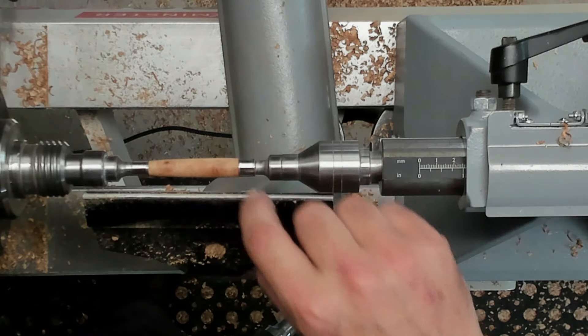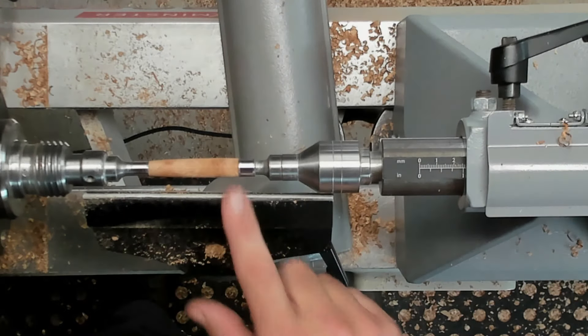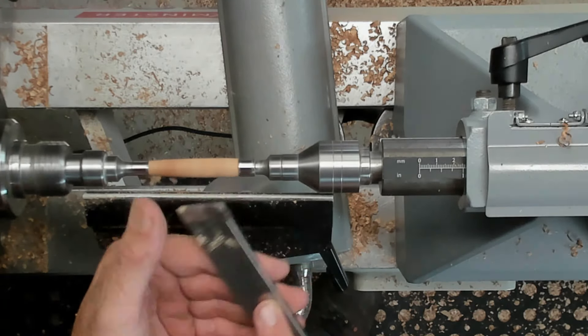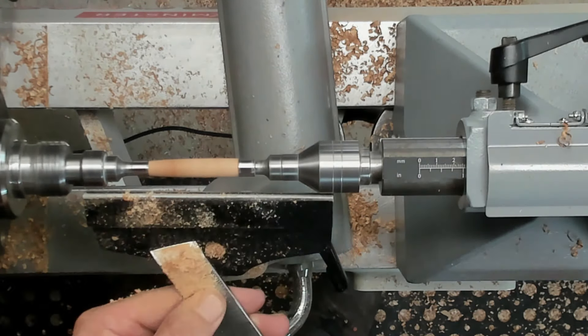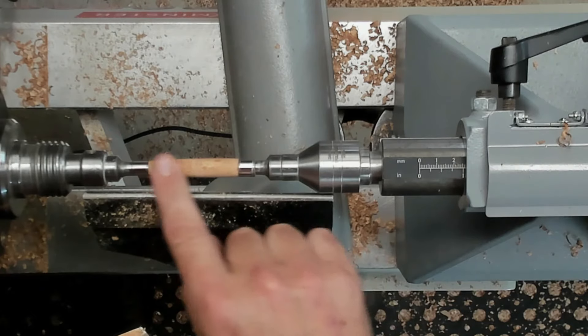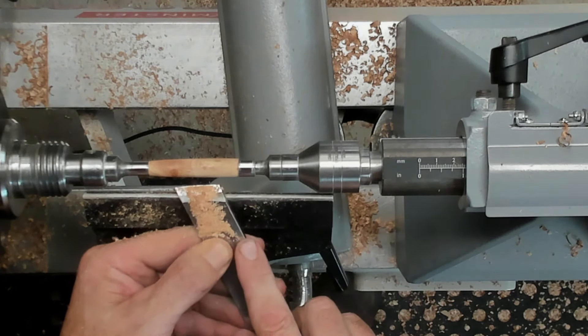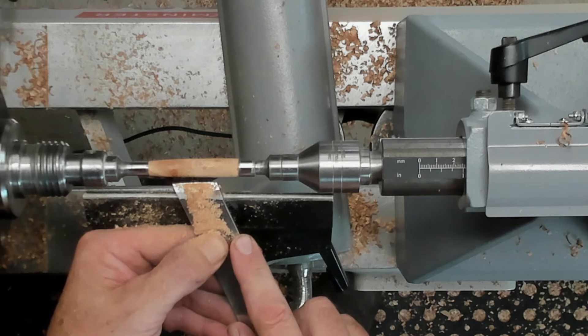What I'm going to do is I'm just going to pop a little layer of CA glue on that, because it is a little piece of burr. I'm just going to use a little bit of thin CA. That's nearly dry already, so now continue turning.